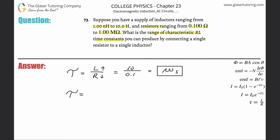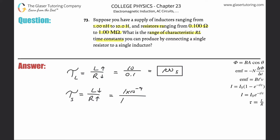Now we can find the smallest time constant using the same analysis but in reverse. We want the numerator to be the smallest and the denominator to be the largest, because that results in the overall smallest fraction. So we take 1 nanohenry, which is 1×10⁻⁹ henrys, divided by 1 megaohm, which is 1×10⁶ ohms.